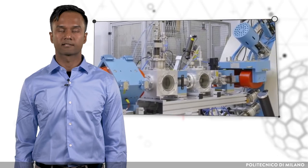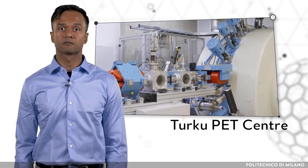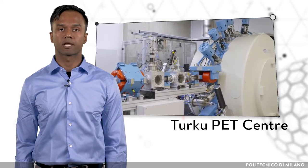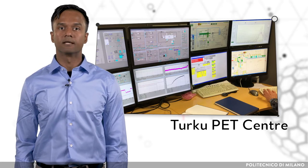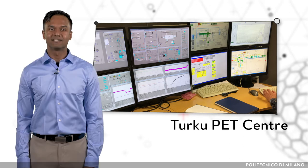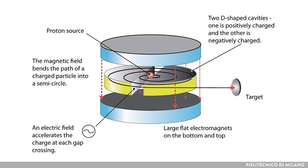Another type of particle accelerator used for production purposes is the cyclotron. Cyclotrons are circular in shape, as opposed to the linear shape of the LINAC. The particle moves in a circular motion under the influence of an electromagnetic field perpendicular to its plane of motion. The D-shaped hollow cavities have oscillating charges which allow for the acceleration of the particle within; due to this acceleration, the particle moves in a larger circular radius with each rotation. As the particle is ejected out, it is guided to hit its target where the nuclear reaction occurs.